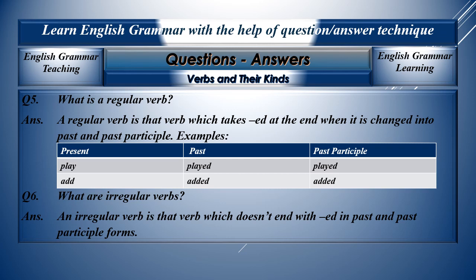Question number five: What is a regular verb? A regular verb is that verb which takes -ed at the end when it is changed into past and past participle forms. For example, play, played, played. Add, added, added.